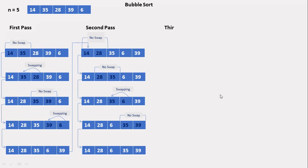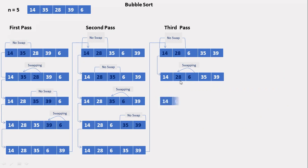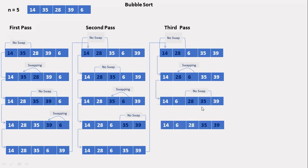In the third pass, we compare the first two elements: 14 with 28 — 28 is greater, no swap needed. Then we compare 28 with 6 — since 6 is smaller than 28, we swap. Next, we compare 28 with 35 — 35 is greater, no swap. Then 35 with 39 — 39 is greater, no swap. After the third pass, the array is: 14, 6, 28, 35, 39.